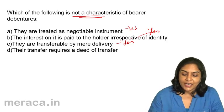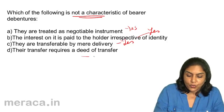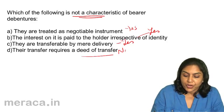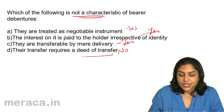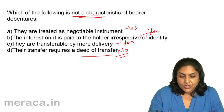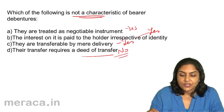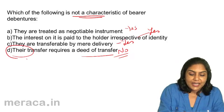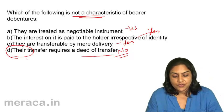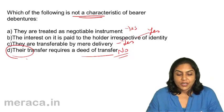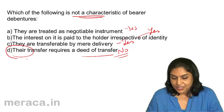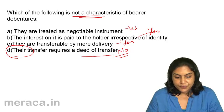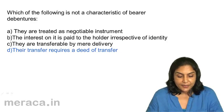D. Their transfer requires a deed of transfer — no, that is not true. If you require a deed of transfer, they would be registered debentures. Therefore, what is not a characteristic of bearer debenture? The answer is D. Transfers requiring a deed of transfer would happen only in the case of a registered debenture. So the correct answer is D.